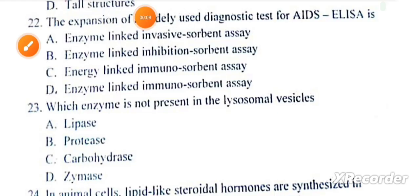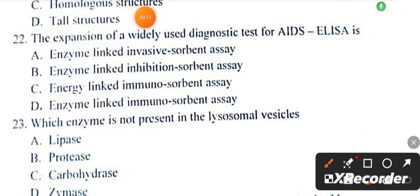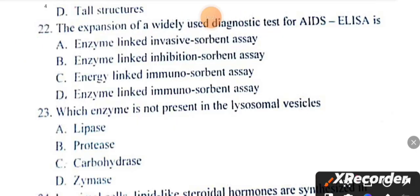Divergent evolution produces homologous structures. The expansion of the widely used diagnostic test for AIDS, ELISA, is enzyme-linked immunosorbent assay.